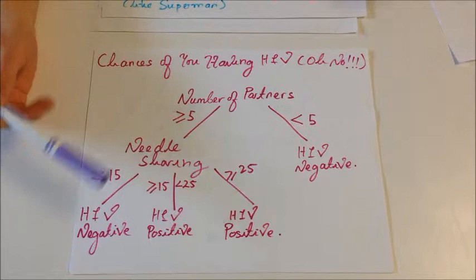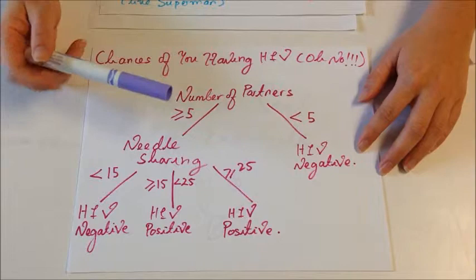So such as the number of partners, if you have slept with less than 5, the likelihood that you are negative would be 5%, say.